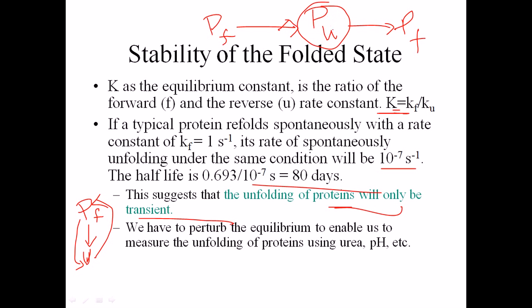The unfolded state of the protein is just a transient state between the folded states. We have a folded state, we have unfolded, then refolding — so this is just a transition. The unfolded state is just a transitional state.